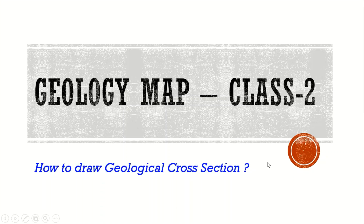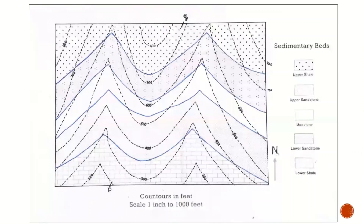In this class we are going to discuss how to draw the geological cross-section. A map is given where two points P and Q are marked. You have to draw a cross-section along P and Q.